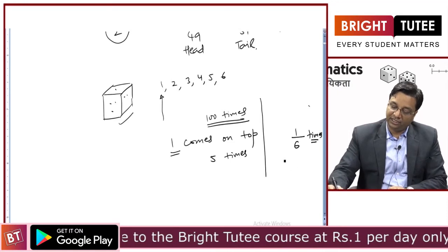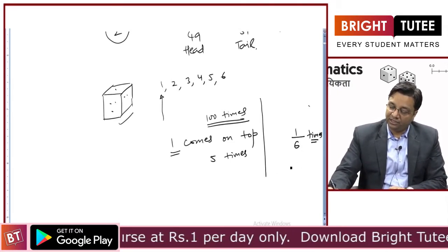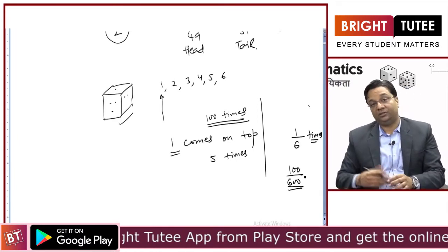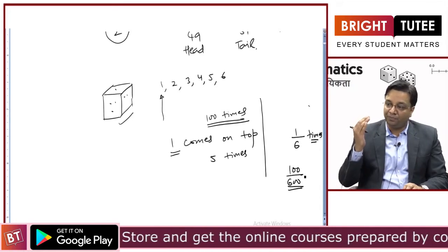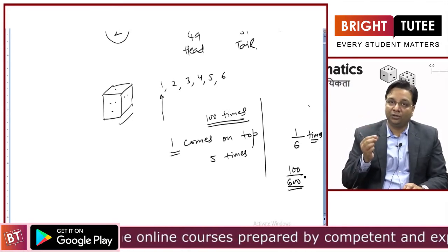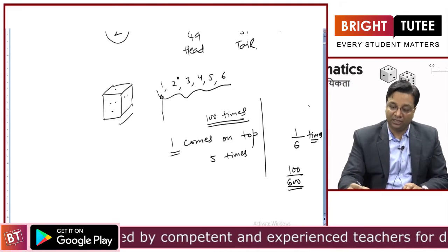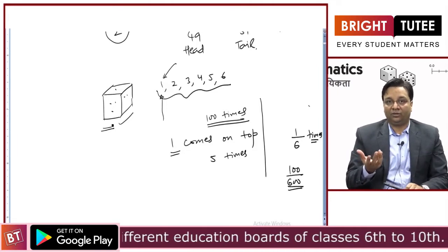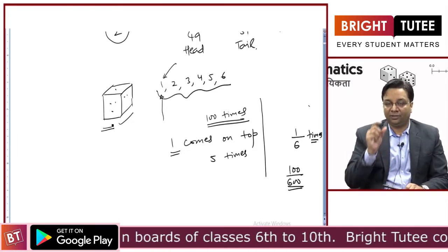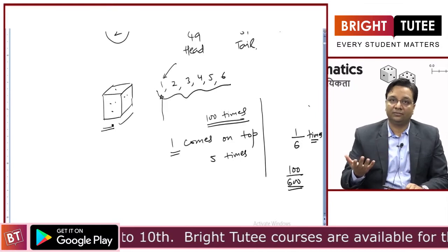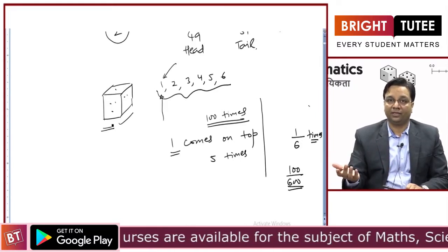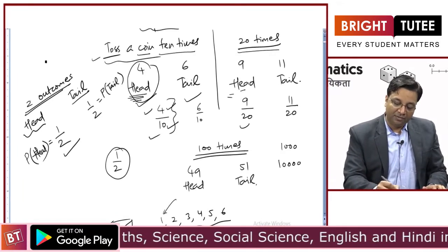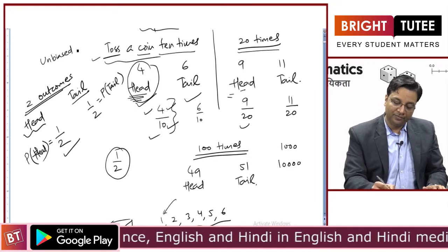Let us say you throw it 60 or 600 times — the probability or chance will come closer to 1/6 because there are 6 outcomes and the die is symmetric all around. It is not biased because of its structure, so it will not favor a particular outcome. Similar is the case with an unbiased coin — because of its shape it will not favor a particular outcome.